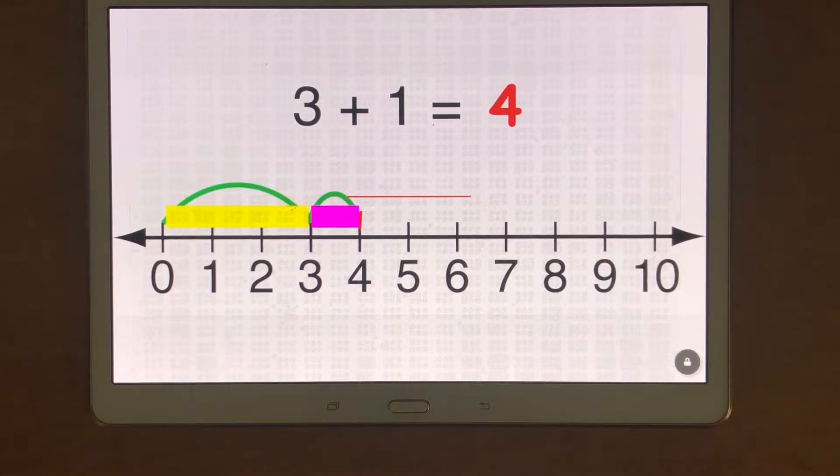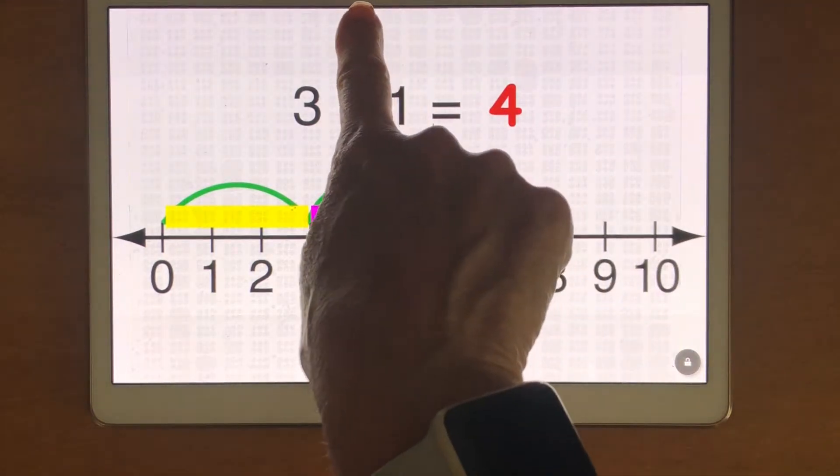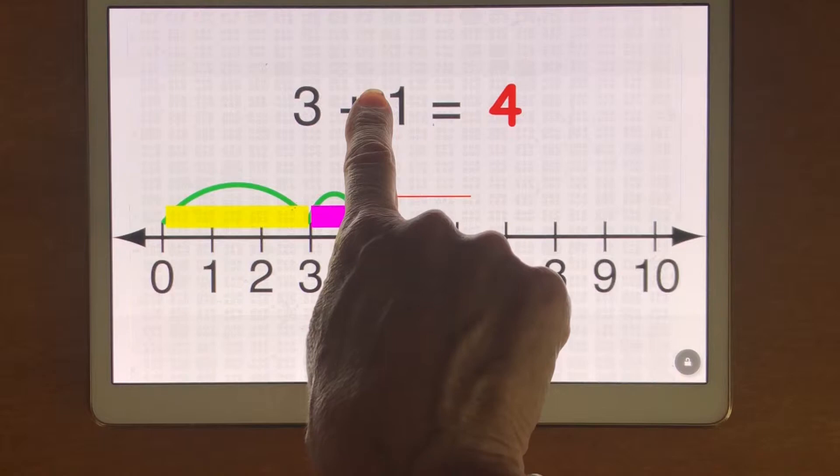I'm going to start with my finger at the top of the screen to find the equation which is at the top. Three plus one equals four.